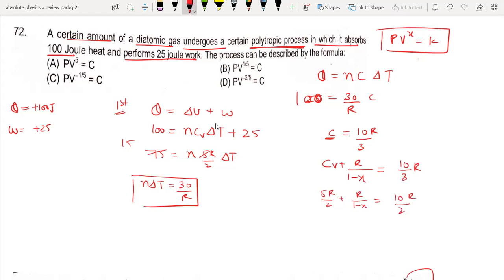Canceling R from all terms, we get 1/(1-x) equals 10/3 minus 5/2, which simplifies to 5/2. So 1/(1-x) equals 5/2, which means 5 minus 5x equals 2.